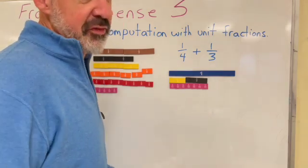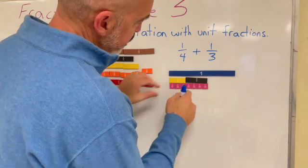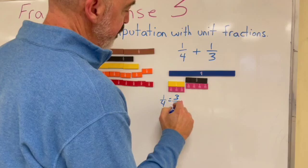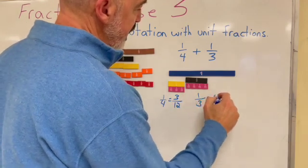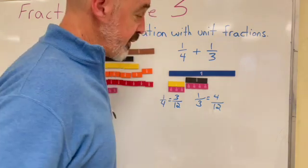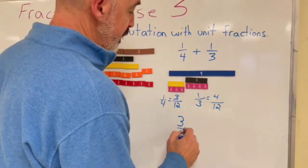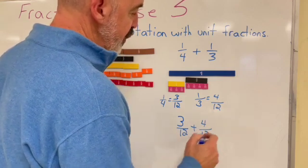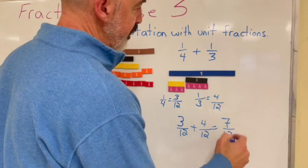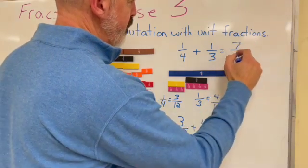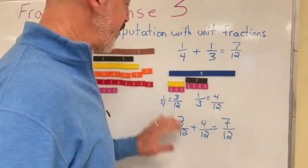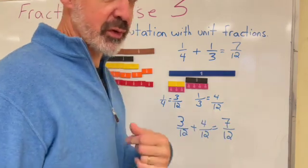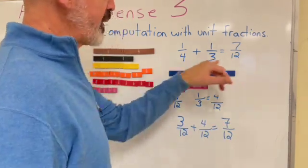But how do they justify it? Well, they have to understand that one-fourth is equivalent to three-twelfths, and one-third is equivalent to four-twelfths. So, the answer to one-fourth plus one-third is seven-twelfths. And you can see why kids would be totally confused without seeing these concrete models, because one plus one is not really seven, and four plus three is not twelve. However, as we know, four times three is twelve.